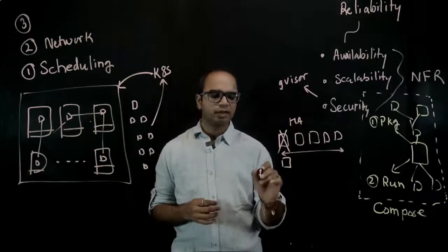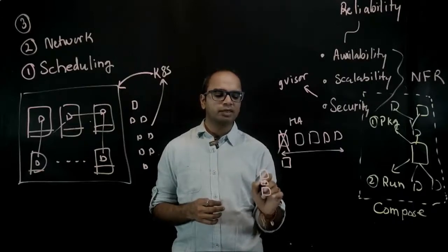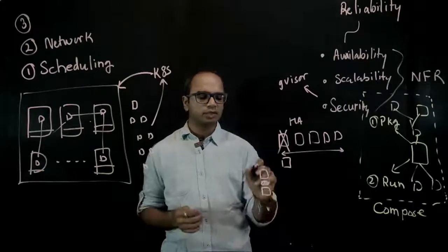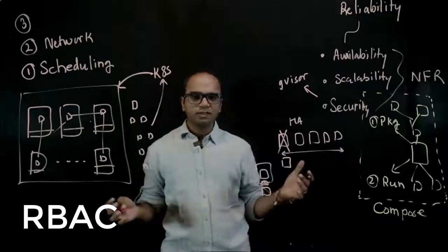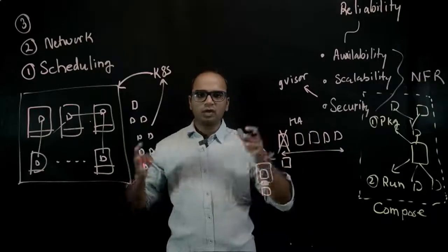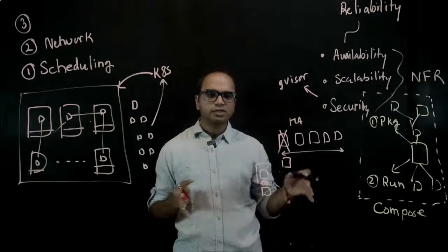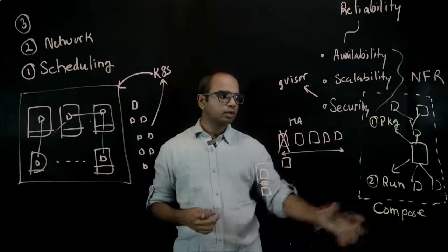gVisor allows you to create another level of isolation—you have a container, you have a kernel, and it creates a sandbox, so another level of isolation. You also have RBAC policies which help you define authentication and authorization. There is a concept of admission control.